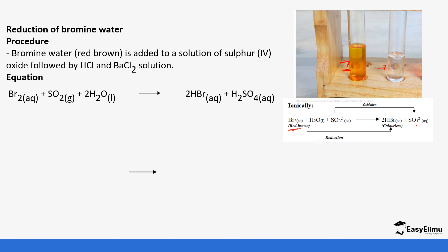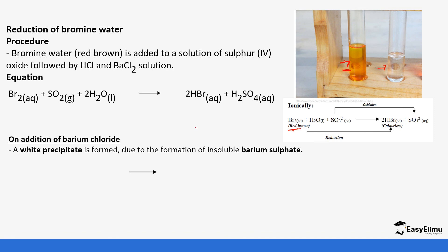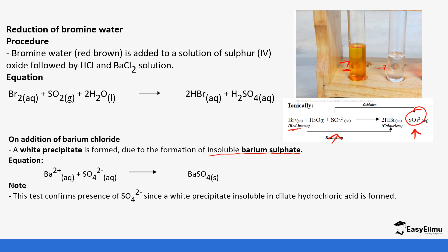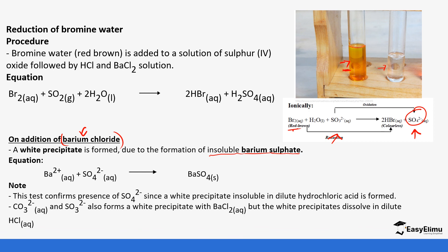If barium chloride is added to this reaction — which contains sulfate ions — a white precipitate is formed. This precipitate is due to the presence of insoluble barium sulfate, because the barium ions react with the sulfate ions in solution to form barium sulfate. This is one of the tests that determines the presence of sulfate ions. In qualitative analysis, barium chloride or barium nitrate can be used as alternatives. For carbonates and sulfates, they also form white precipitates with barium chloride, but the precipitate does not dissolve in hydrochloric acid.